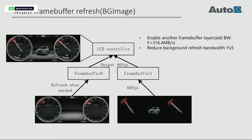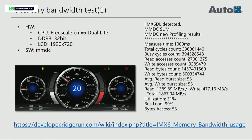Here is another method for frame buffer refresh — we call it the BG image. On the Freescale i.MX6 processor, we can use not just one frame buffer but two frame buffers for the same LCD controller output on the same LCD. We use frame buffer 0 for the background and frame buffer 1 for the front end. This adds one additional F of cost, but we can reduce background refresh bandwidth by about 5 times F. Testing confirmed this is very effective.